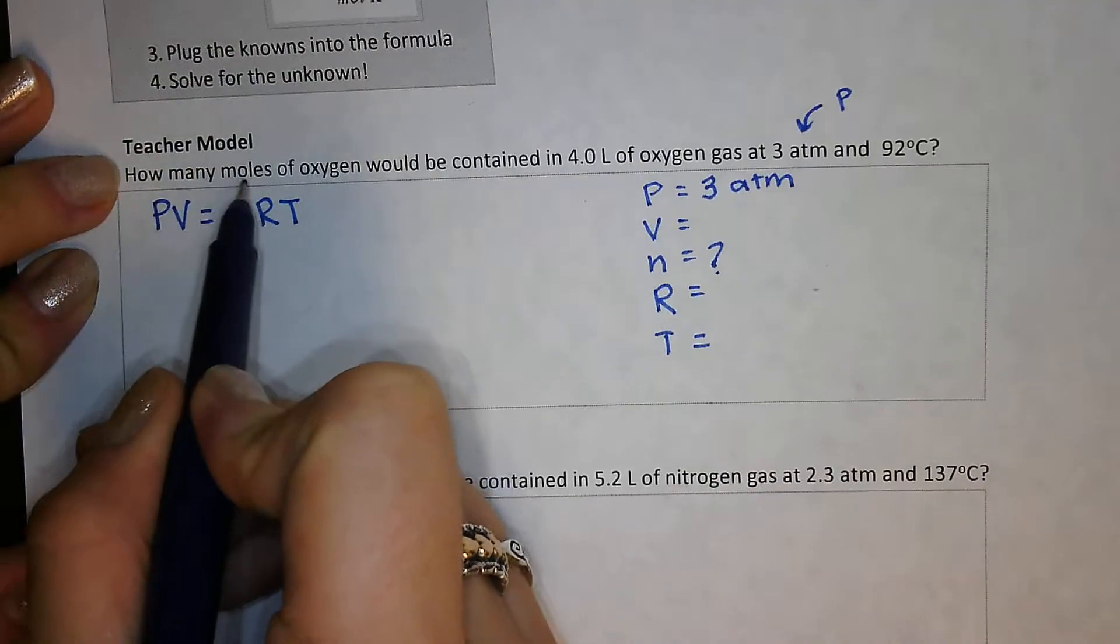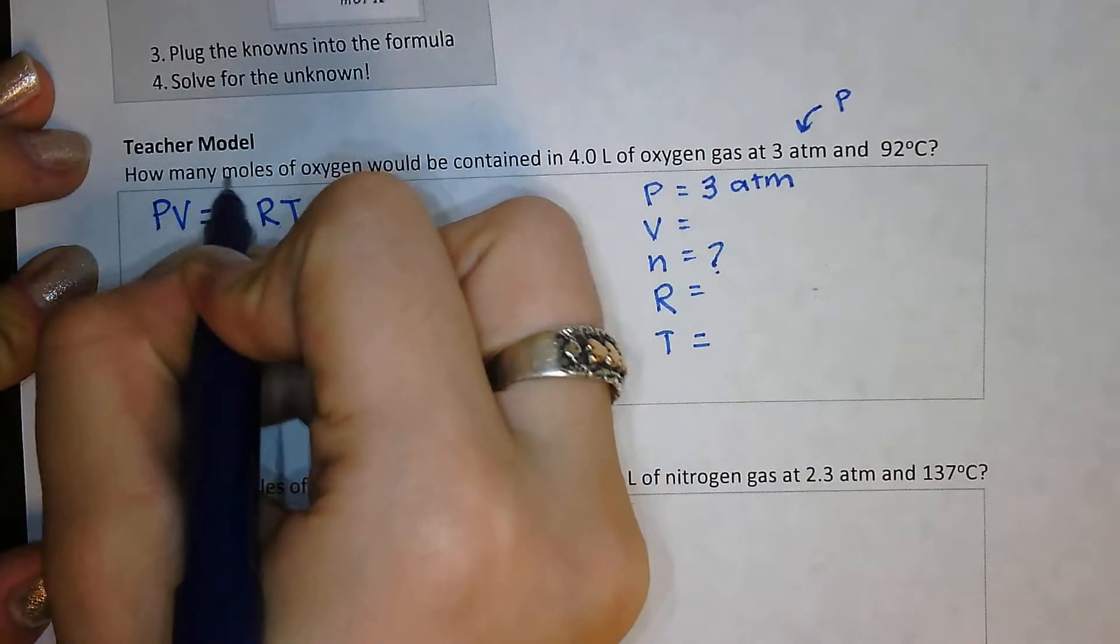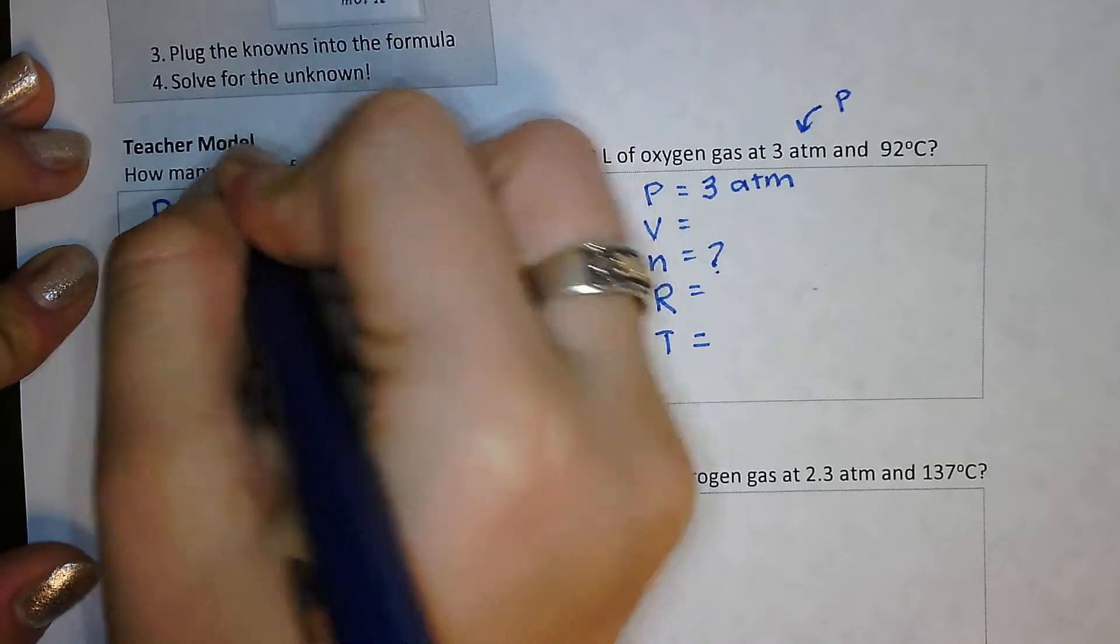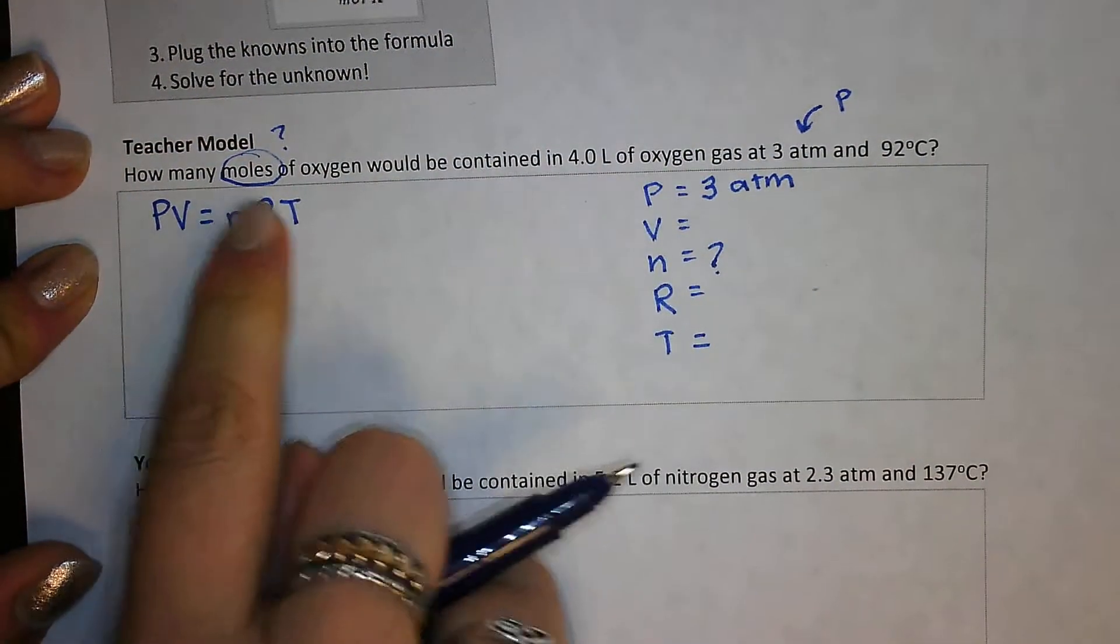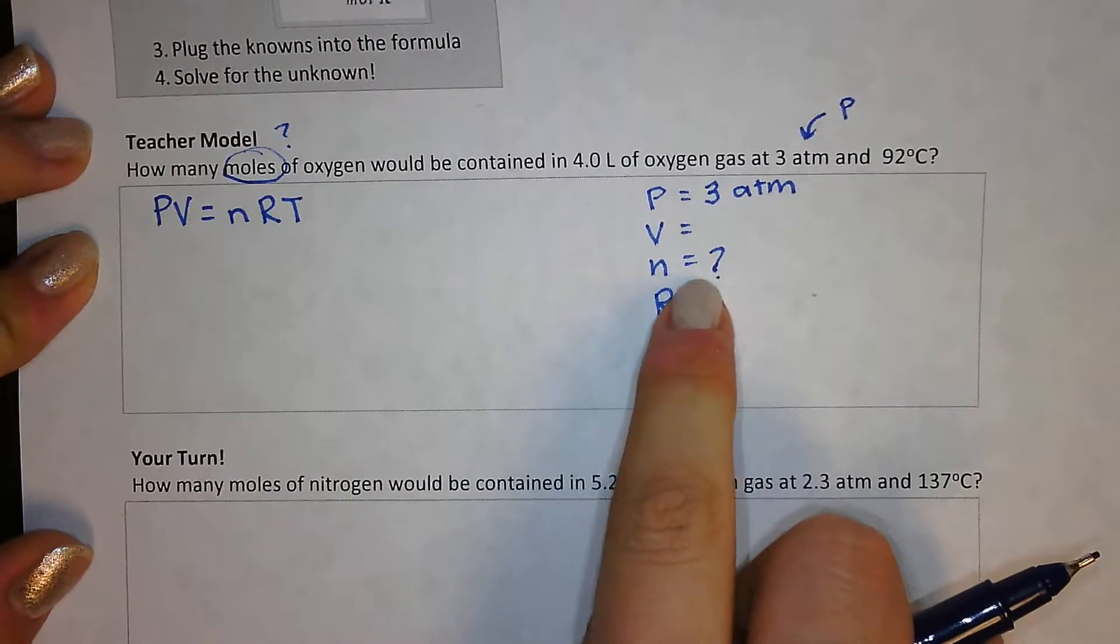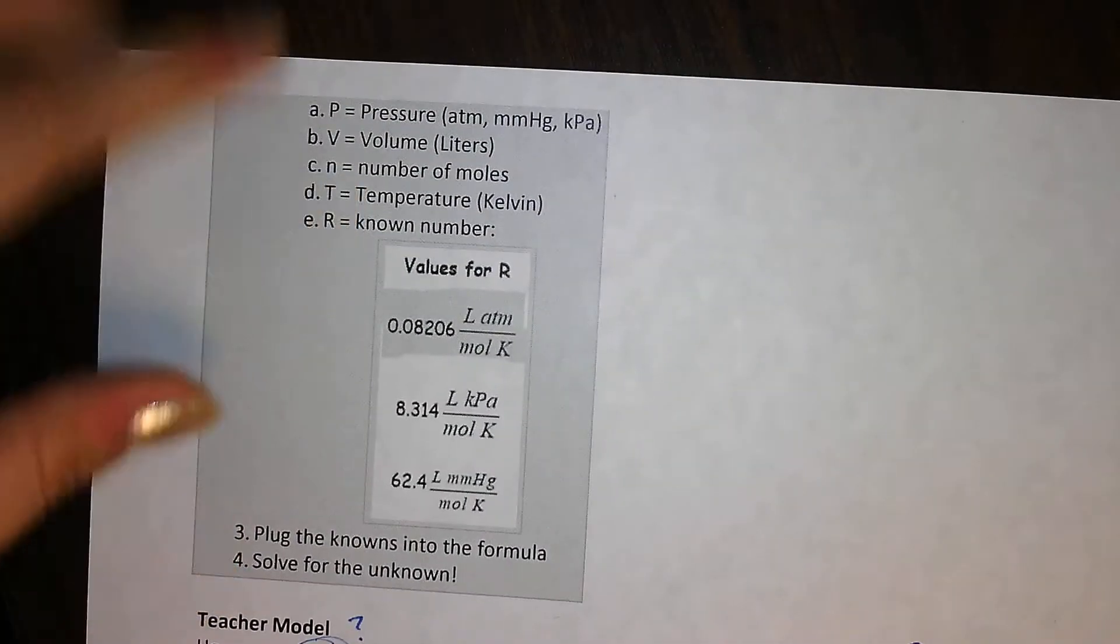So how many moles? Boom. I already know which variable I am solving for. I am solving for moles. So I drew a little question mark on my n because n represents the number of moles.